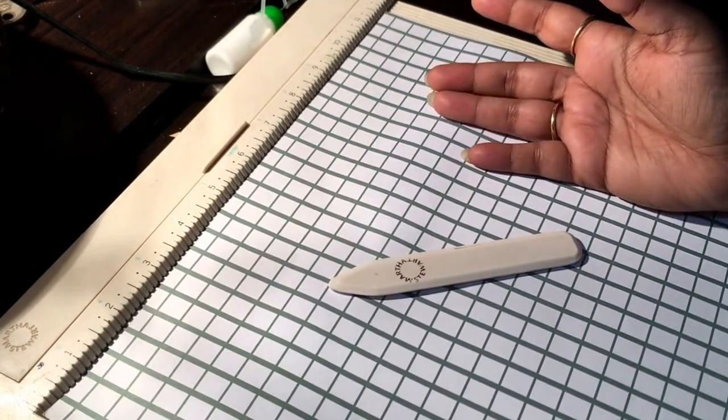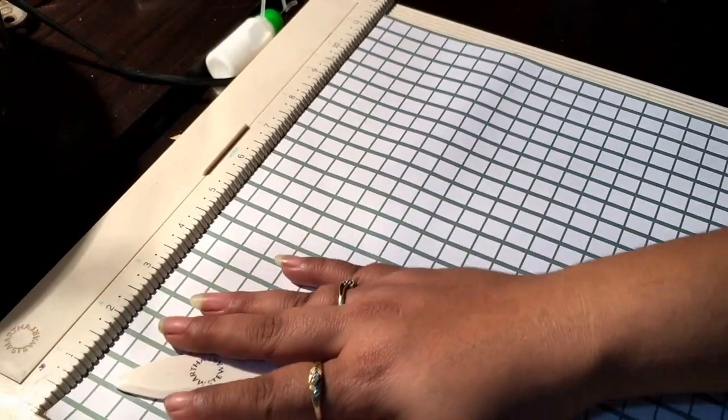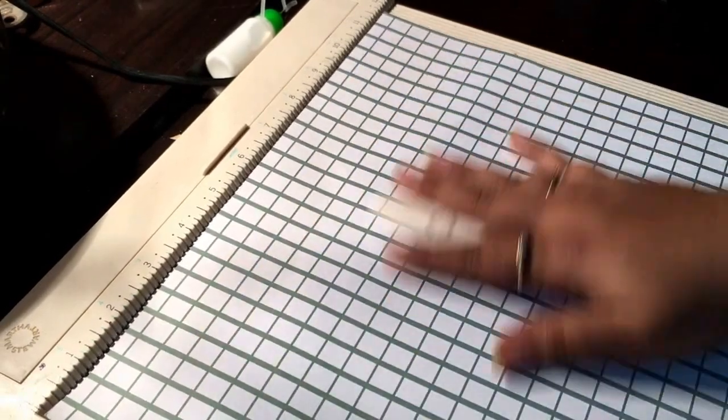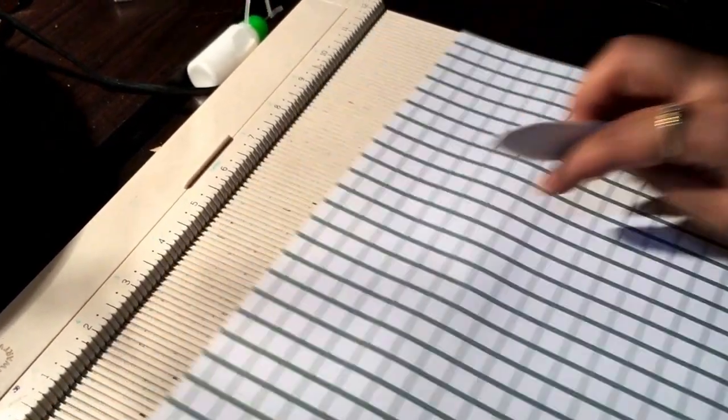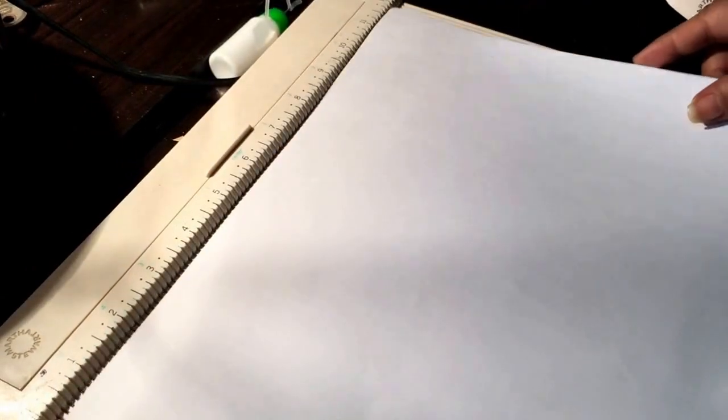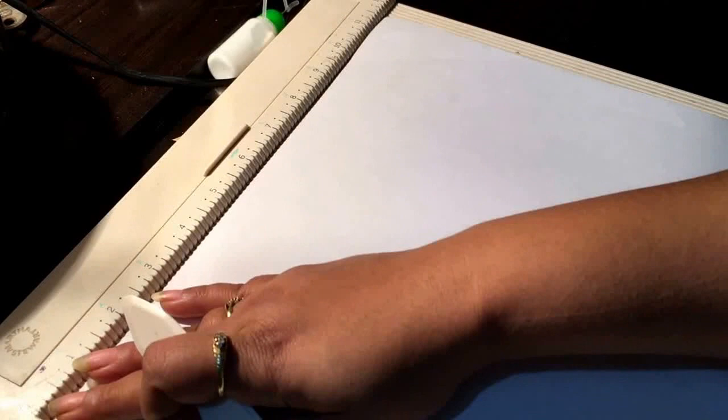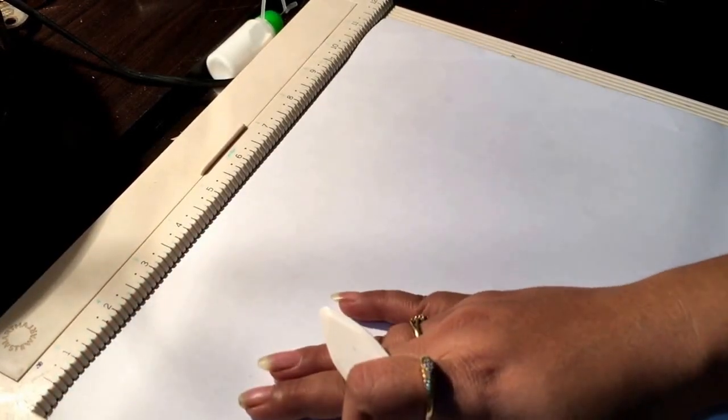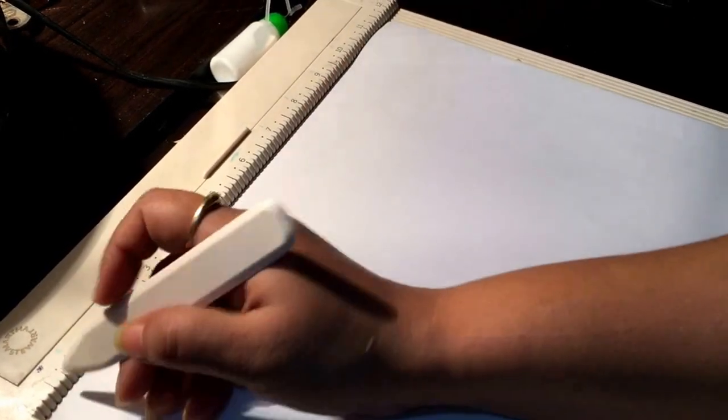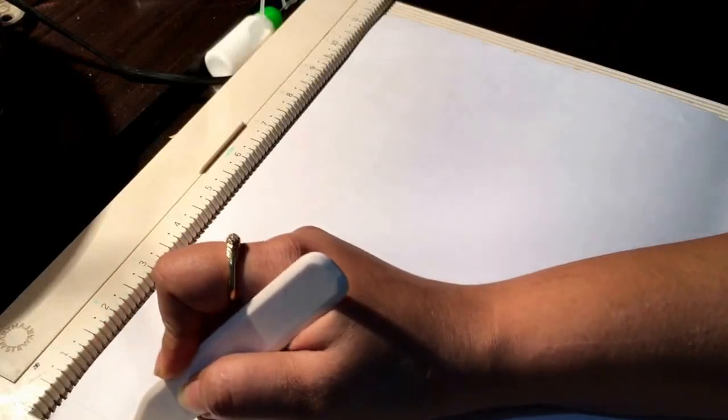Now, this paper has a grid and you will not be able to see the score lines clearly. I will go ahead and do the scoring on this side. Take one 12 by 12 inch paper. The first score is going to be at a half inch mark.